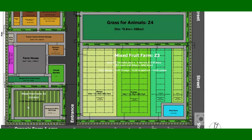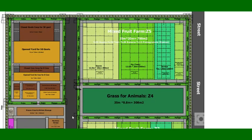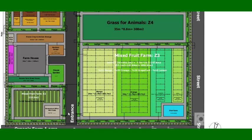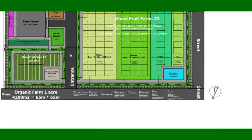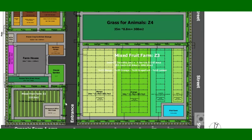Zone two is mixed fruit raised beds. Each bed width is one meter, and the distance between each bed is 0.3 meters. Inside zone two we also have the management office, because this is the entrance of the farm. When you enter the farm, you find the management office beside you. The main road through the farm allows you to reach all zones.